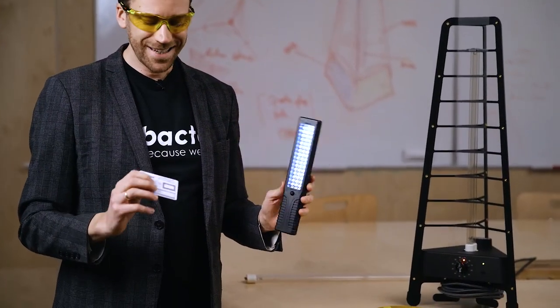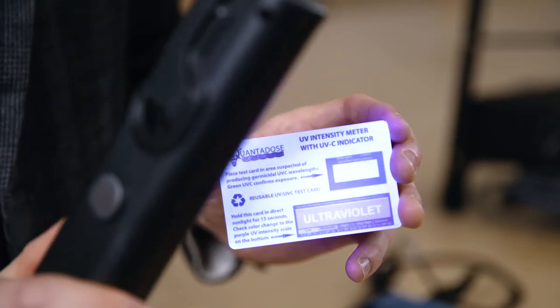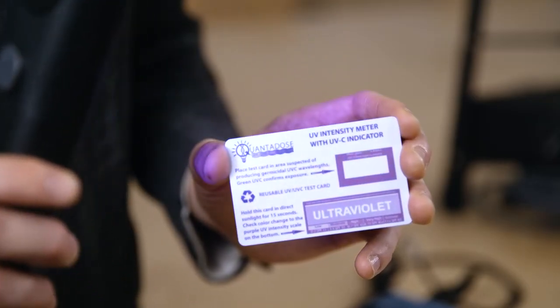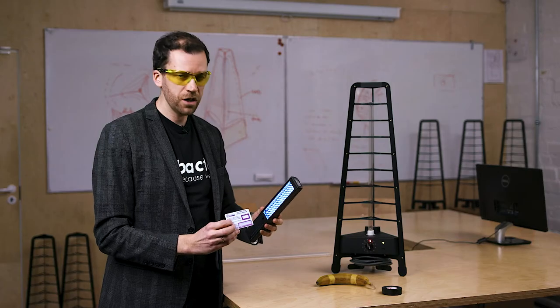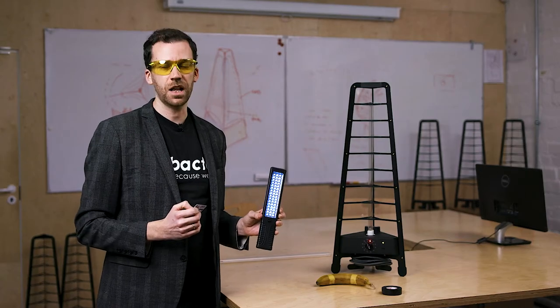By contrast, if we shine this lamp, which is just a blue LED lamp, it's not UVC at all. As you can see, those letters don't shine up. So this card tells you if it's genuine UVC or just a simple colored lamp like this.